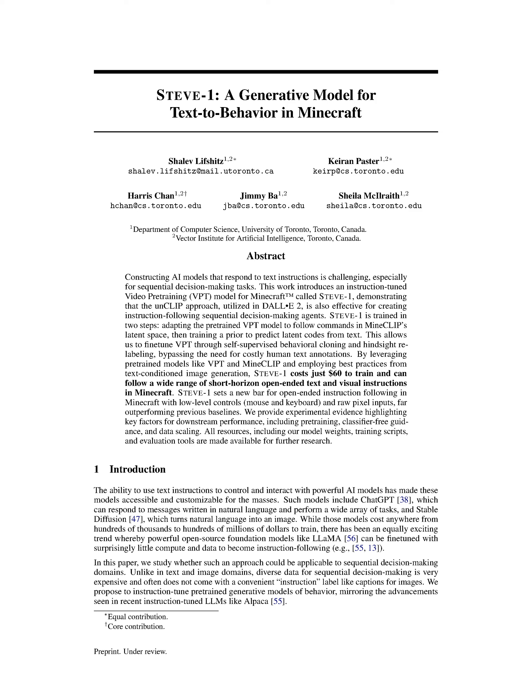Despite the high cost of training these models, there's an exciting trend of powerful open-source models like LAMA that can be fine-tuned with minimal computational resources and data to follow instructions. In this paper, we explore the possibility of applying this approach to sequential decision-making domains. Unlike text and image domains, obtaining diverse data for sequential decision-making is costly and often lacks convenient instruction labels, such as image captions. We suggest fine-tuning pre-trained generative models of behavior, similar to recent advancements in instruction-tuned language models like ALPACA.